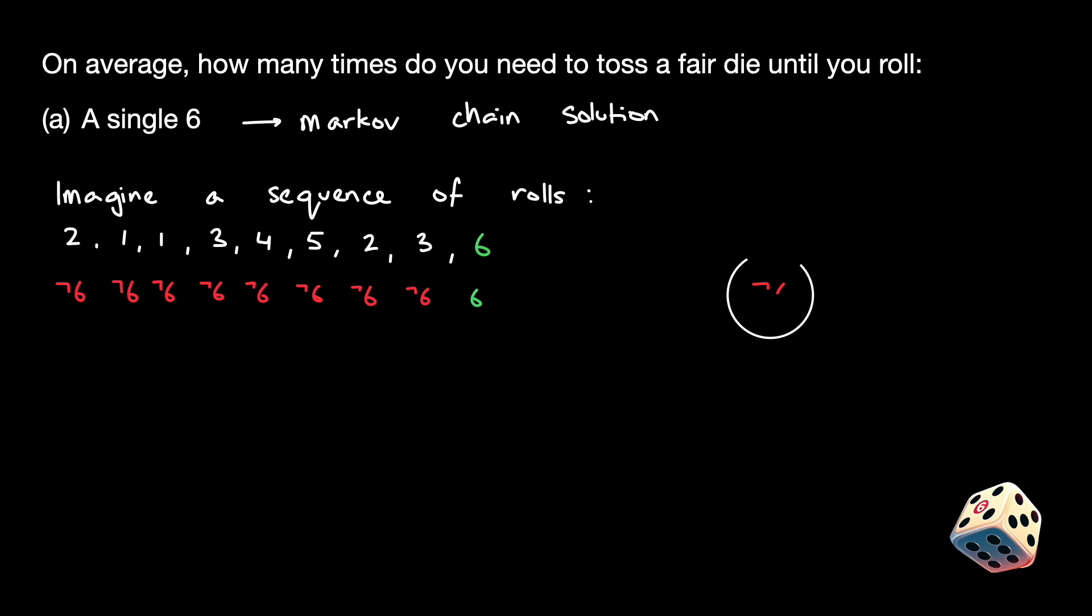Let's start by writing out the states, NOT-6 and 6. Now, we know that on any given toss, we have a 1/6 chance of going from NOT-6 to 6 because we have a 1/6 chance of rolling a six on any given roll.